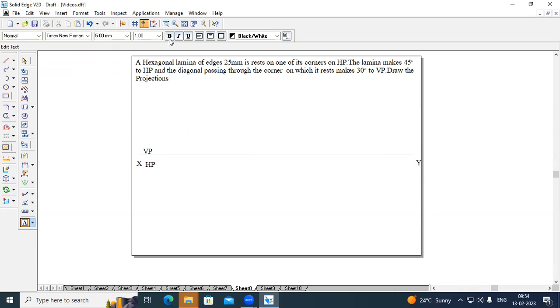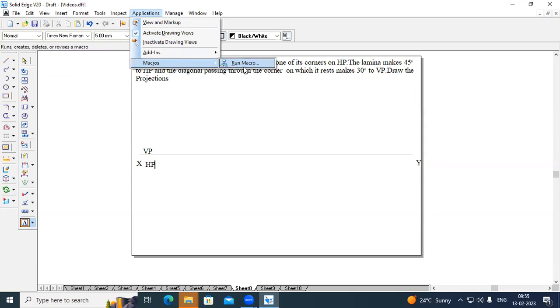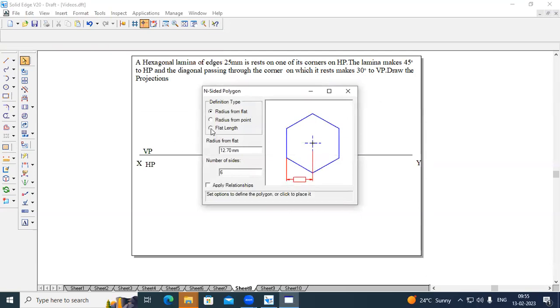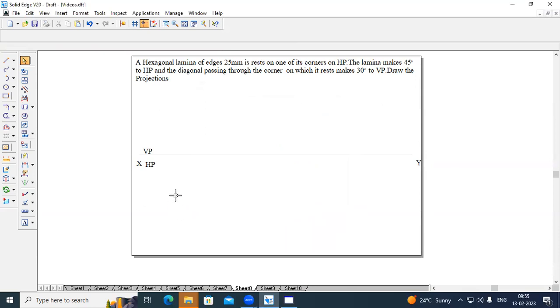First, we'll create hexagonal lamina, go to applications, macros, run macro, select inside polygon, and choose flat length. And each side is 25 mm. So, I'll choose flat length as 25 mm. And number of sides to create for hexagon is 6. Minimize. Place it.